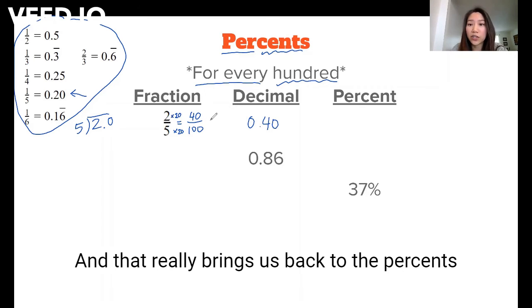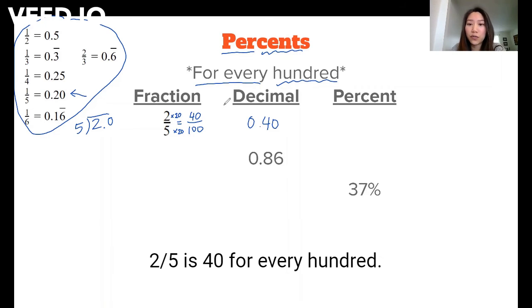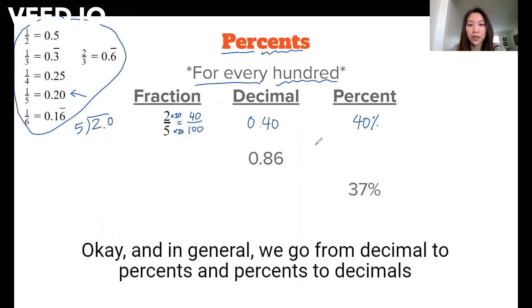And that really brings us back to the percents because percent means for every hundred. That means that two-fifths is 40 for every hundred. So that'd be 40%.